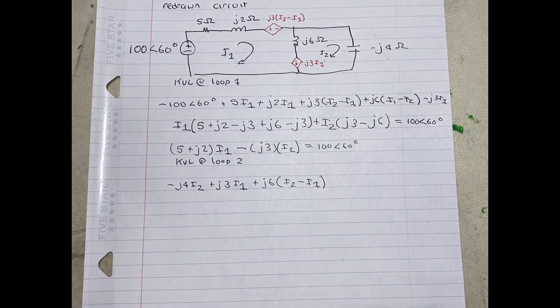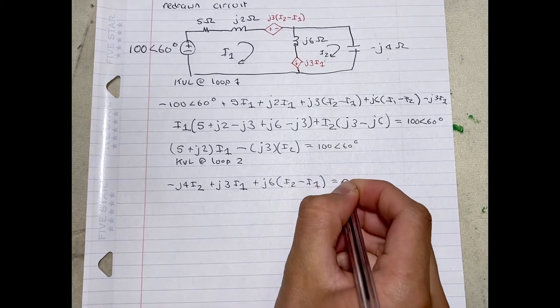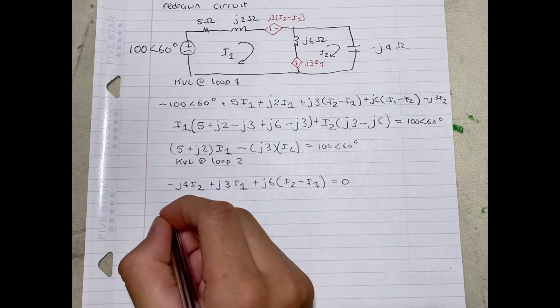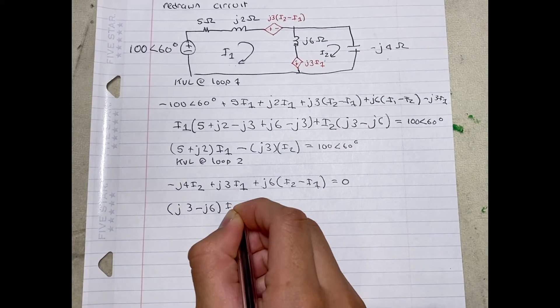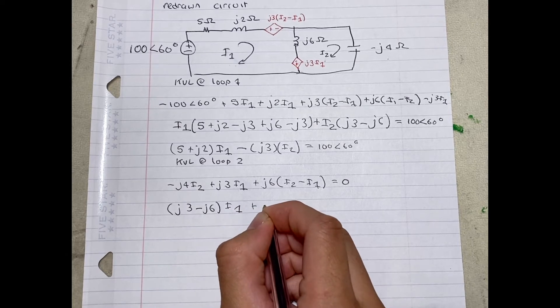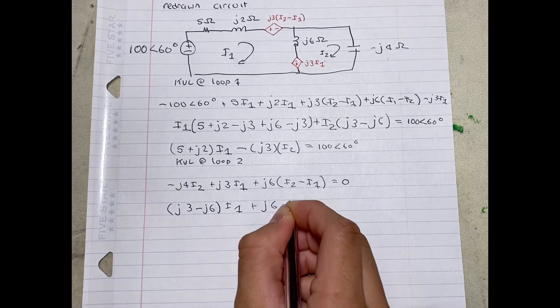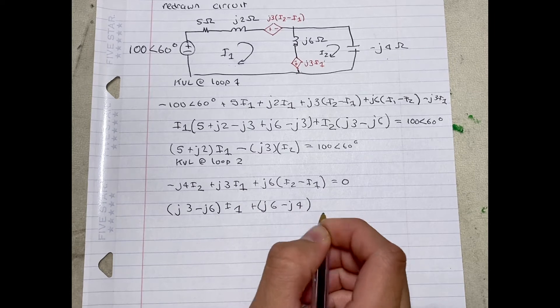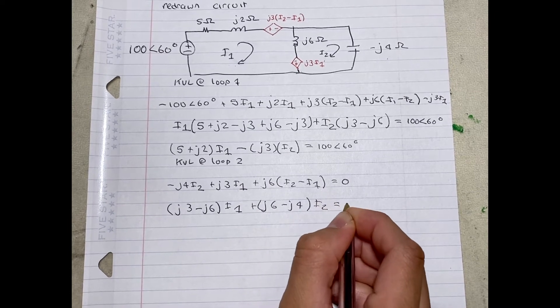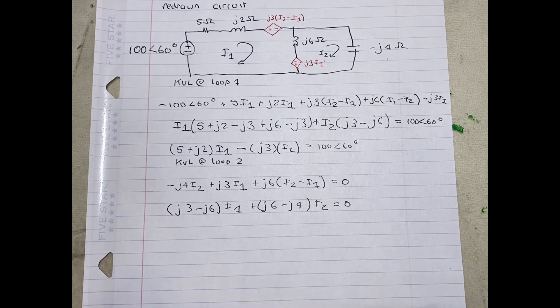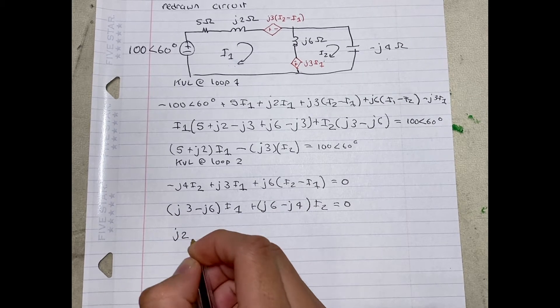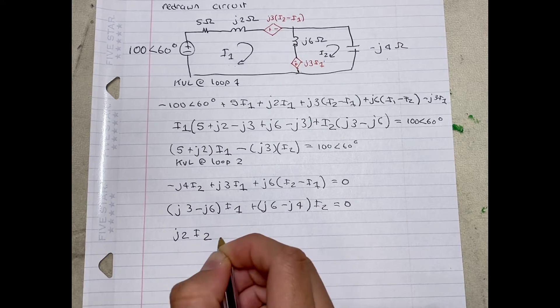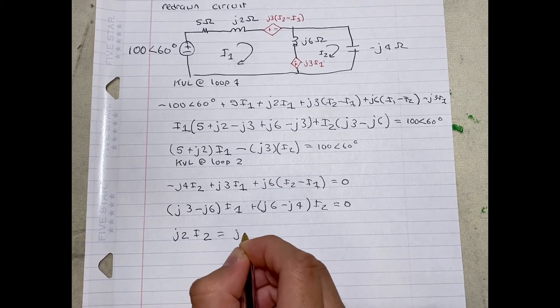And that's equal to 0. We can simplify that further by writing J3 minus J6 times I1, plus J6 minus J4 times I2 is equal to 0. This simplifies to J2 times I2 is equal to J3 I1.